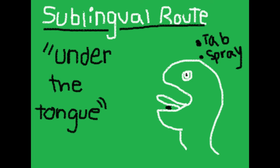Sublingual — 'sub' means below and 'lingual' means tongue. You can think of language and lingual: you talk with your tongue. So sublingual is anything given under the tongue. Nitroglycerin is a common sublingual medication that goes under the tongue.